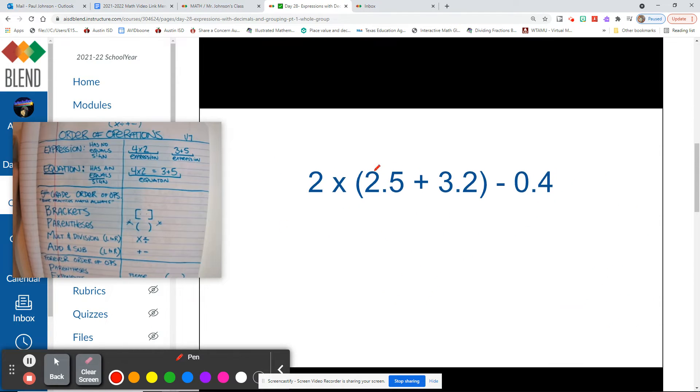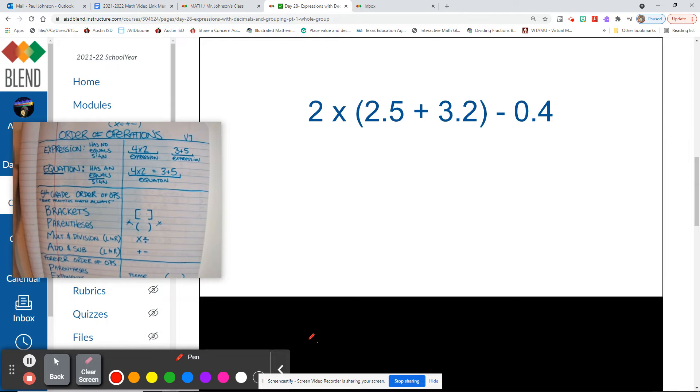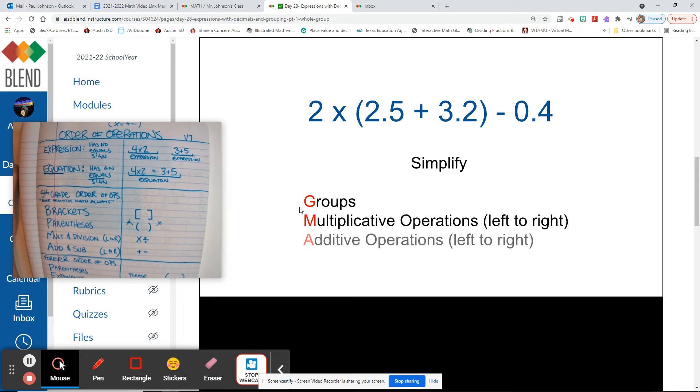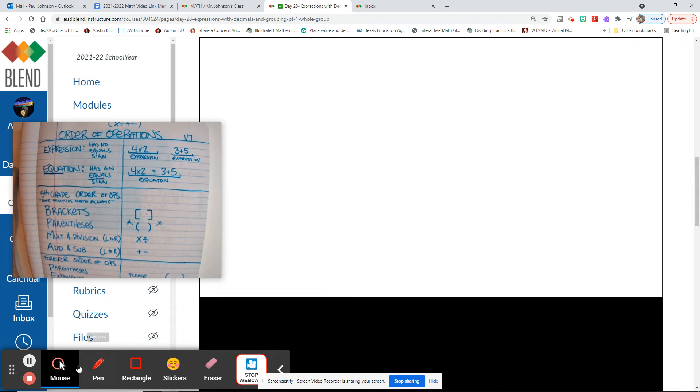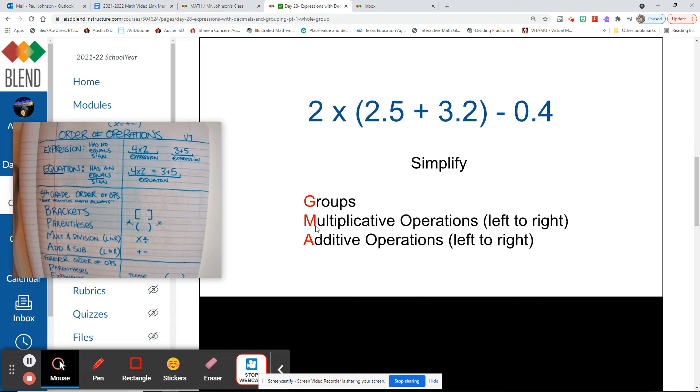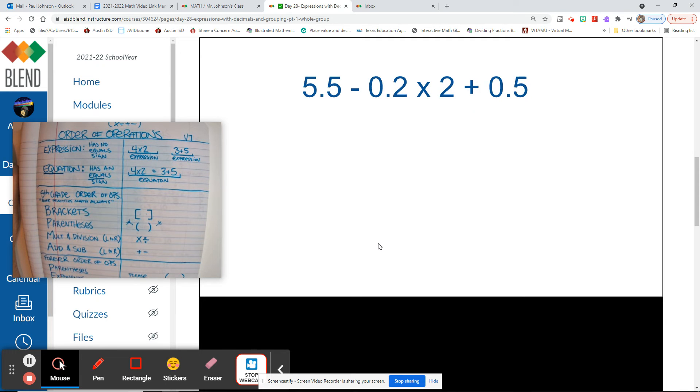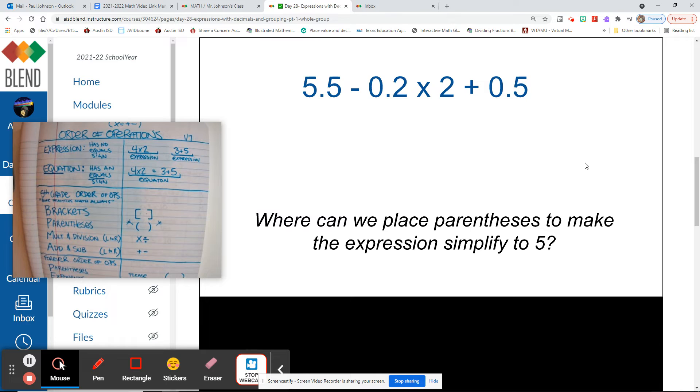So let's take a look at the next part. Let's see if they show us what to do here. Oh, so they've given us, like, instead of BPMA, they're just saying groups. So BP is combined to GMA. So they are showing you groups. Ah! Groups, multiplication operations left to right, additive operations left to right. So remember, multiplicative means multiply and divide. Additive means add and subtract. Alright, so let's see. Where can we place the parentheses to make the expression simplify to 5?